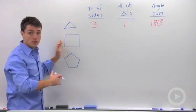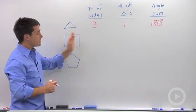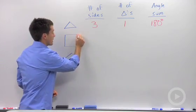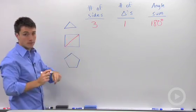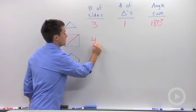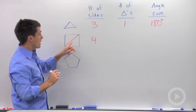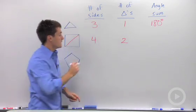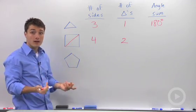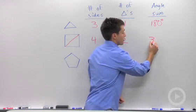So let's move on to the square. Well, right now we don't have any triangles, but if I drew in one diagonal, I've now created two triangles. So the number of sides is four, the number of triangles is two, and if we have two triangles, if I add that up, that's going to be 360 degrees.